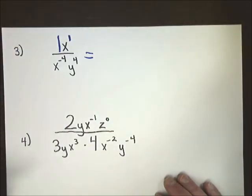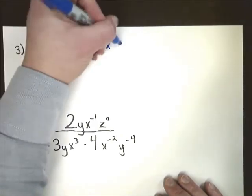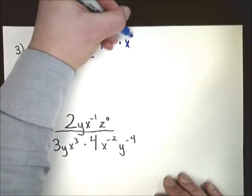...this x to the fourth, or x to the negative fourth, I'm going to put it up top. One x to the first times x to the fourth.